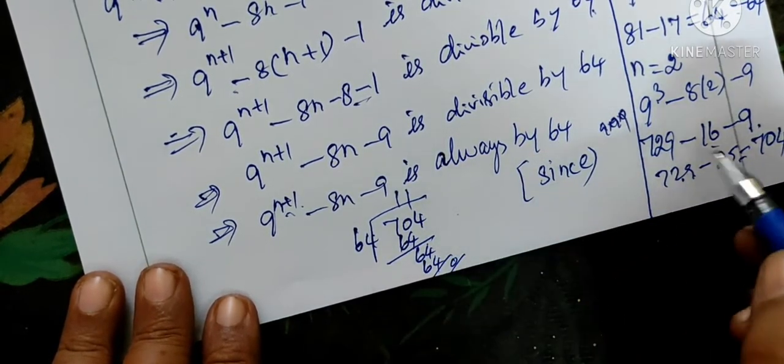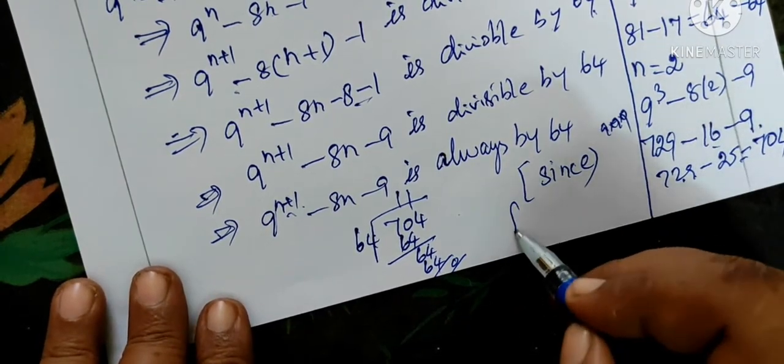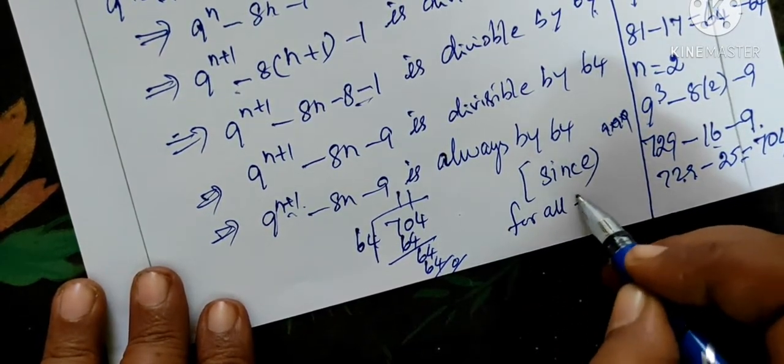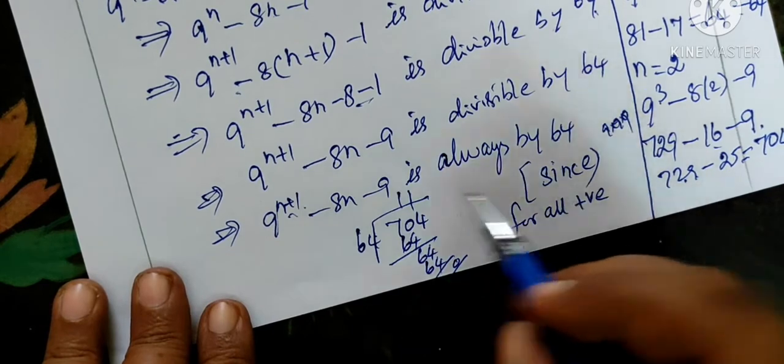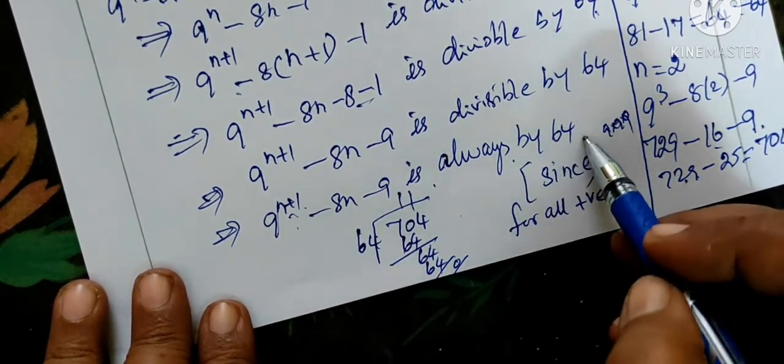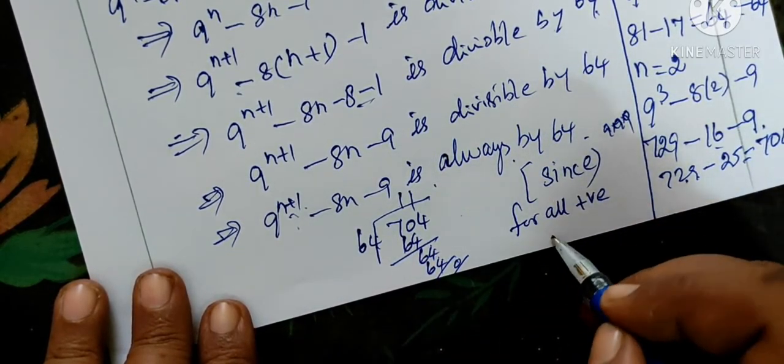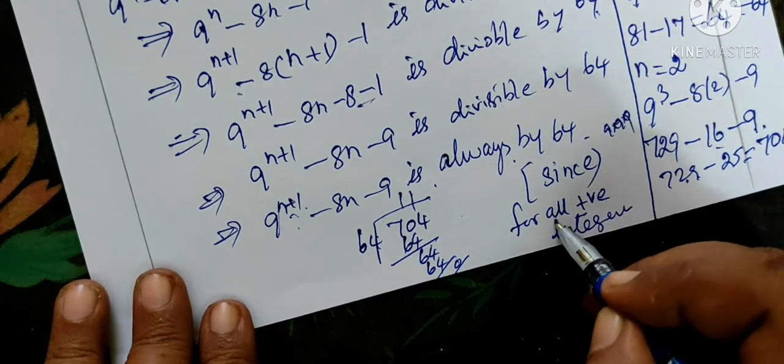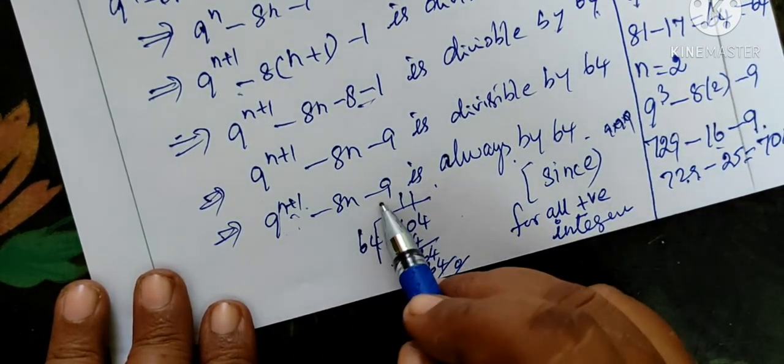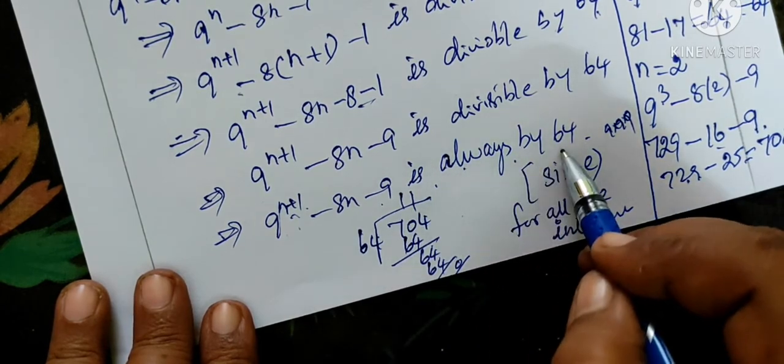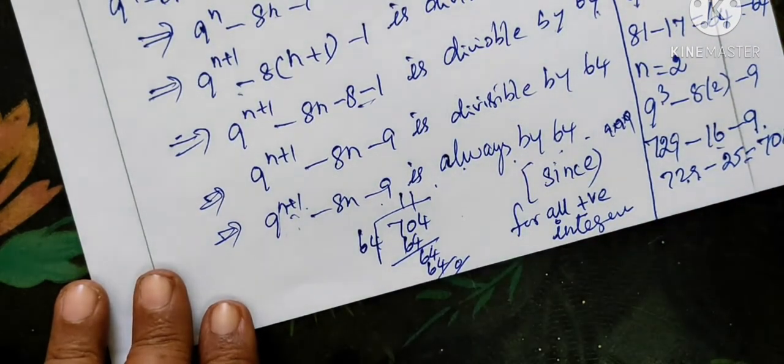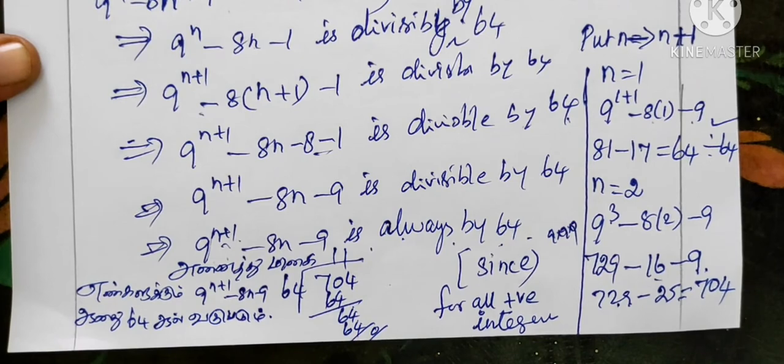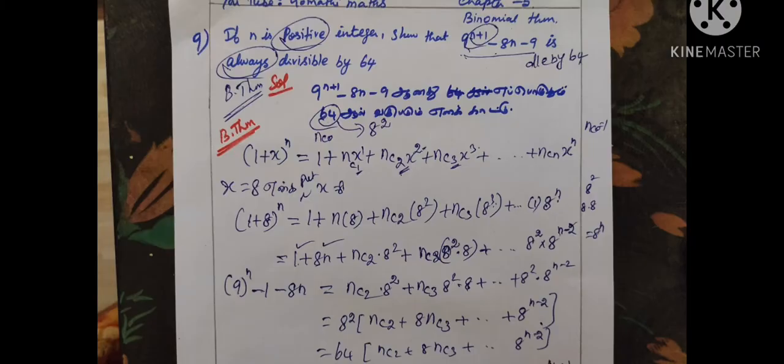So in this way, divisible by 64. For all positive integers, this expression is always divisible by 64. For all positive integers, this expression will always divide.